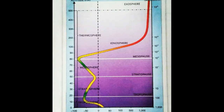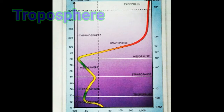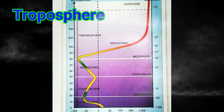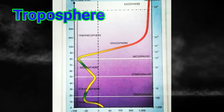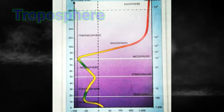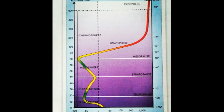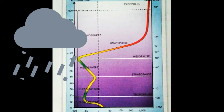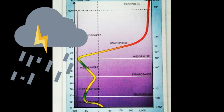Here is the figure showing the structure of the atmosphere and the distribution of temperature in it. The troposphere is the lowest layer and closest to the earth's surface. It extends from mean sea level up to about 8 km over the poles and about 18 km over the equator. The temperature in this layer decreases with increase in height. The troposphere is the home of clouds, lightning, and other weather phenomena.